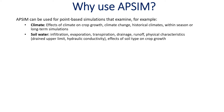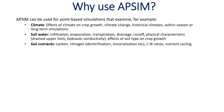APSIM has a detailed soil water component, so you can look at things like infiltration, evaporation, drainage, and runoff. It is primarily driven by soil physical characteristics, and that can be a simple tipping bucket mechanism or the Richards Equation which is a bit more detailed. That uses things like drained upper limit and hydraulic conductivity, and you can look at how soils might affect crop growth.